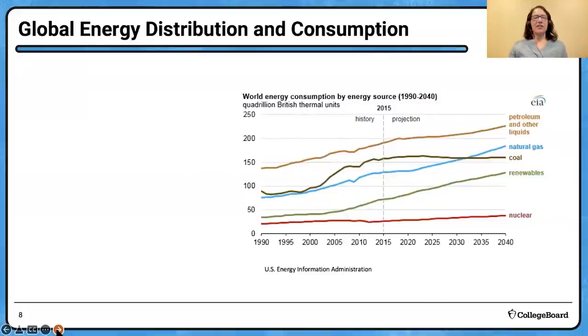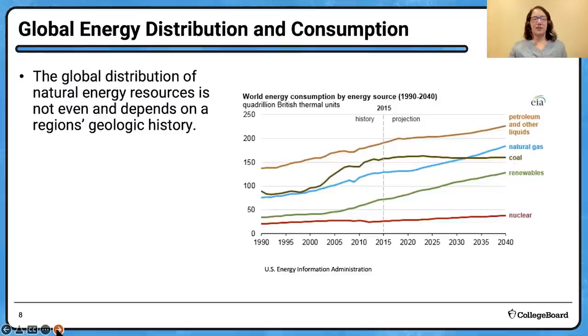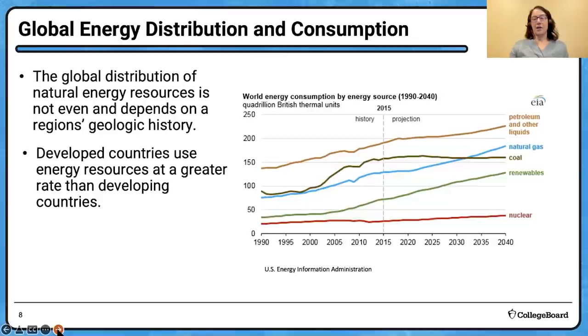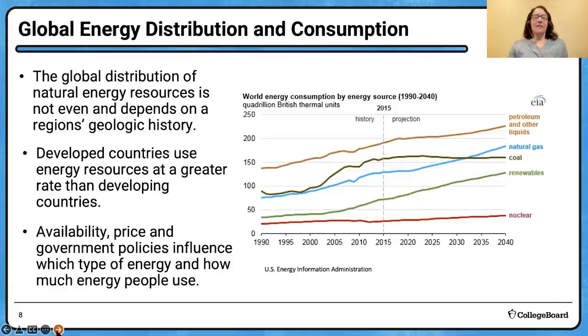Another big concept in this unit is looking at energy distribution and consumption on a global scale. The global distribution of how those energy resources are dispersed across our planet isn't even, and it depends on Earth's geologic history. We have some regions that are the energy winners and some that are the energy losers. Developed countries tend to use energy at a much greater rate than less developed countries. Think about the demographic transition model from our study of human population. The availability, the price, and government policies influence which type of energy people use and how much of it they use.